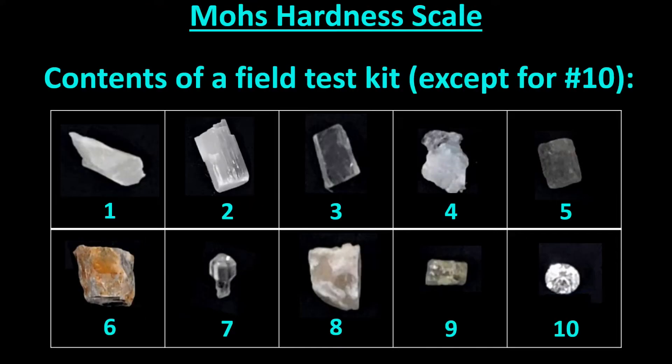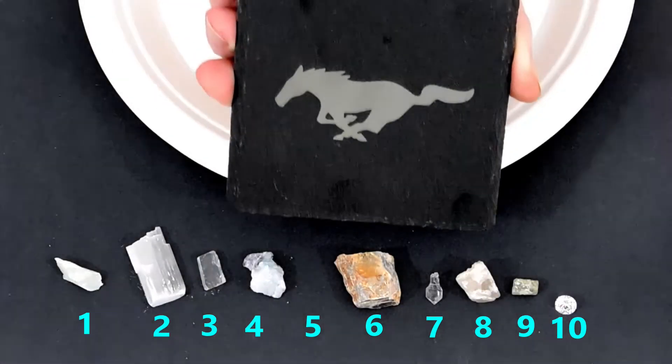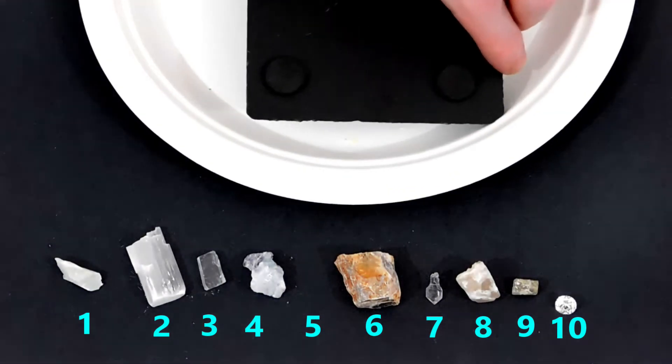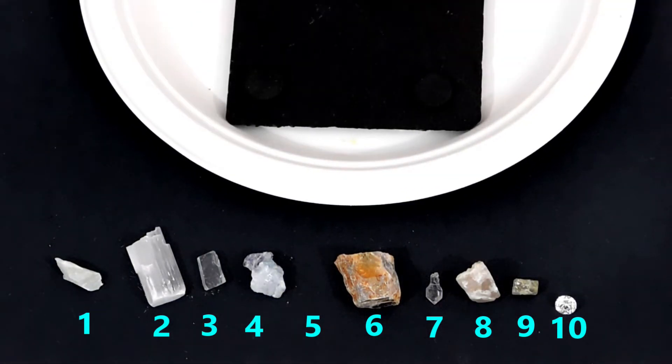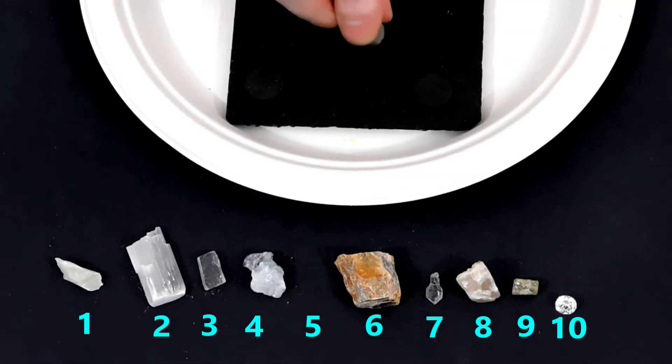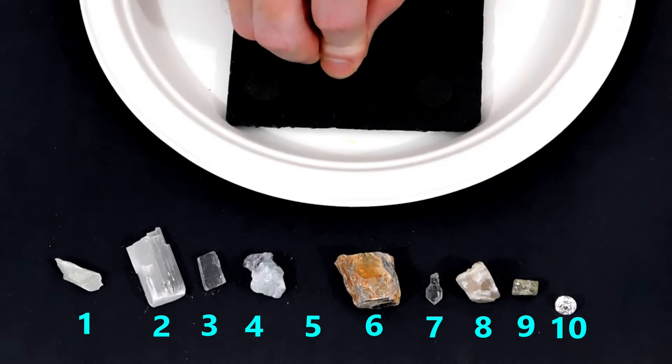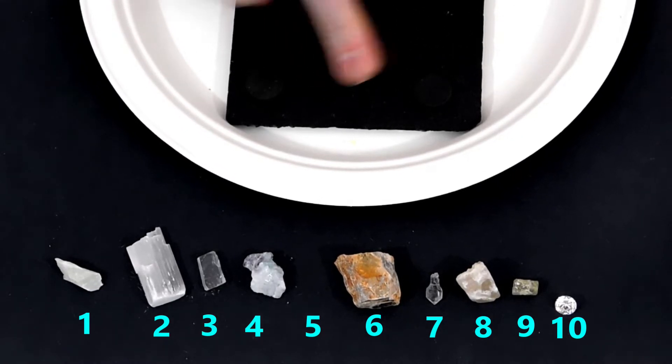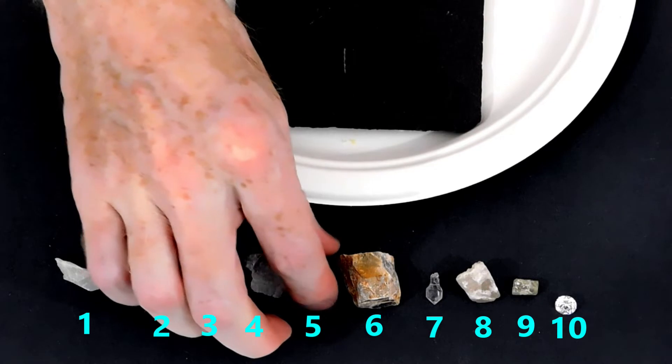Using this kit, we can test any object and estimate how hard it is. We'll show three examples. This coaster is made of a rock called slate. We'll start with the fifth hardest mineral, which is apatite. We pull the apatite across the slate and it leaves a scratch. That tells us that the apatite is harder than the slate.